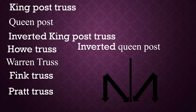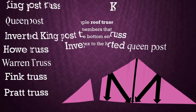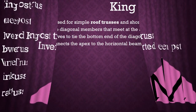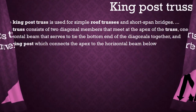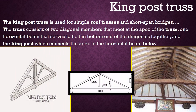The first one is king post truss. The king post truss is used for simple roof trusses and short span bridges. The truss consists of two diagonal members that meet at the apex of the truss, one horizontal beam that ties the bottom ends of the diagonals together, and the king post which connects the apex to the horizontal beam.